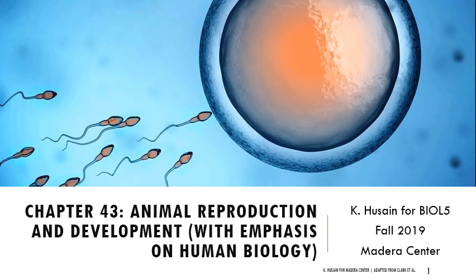This is the second lecture for week 10, and I'm very sorry about the delay in posting both the slides and the actual lectures. I had a lot of stuff come up, but hopefully this will be a good transition between animal systems and information flow, which we'll be talking about over the next few weeks — covering more cellular processes like mitosis, meiosis, and genetics. This chapter is about animal reproduction, with an emphasis on human biology.